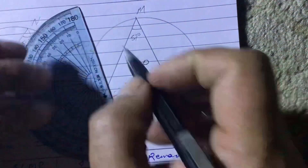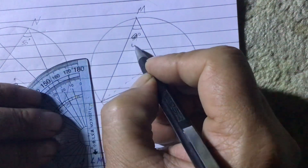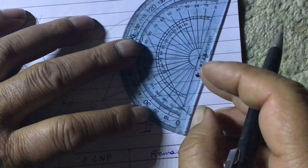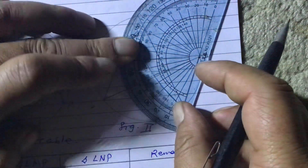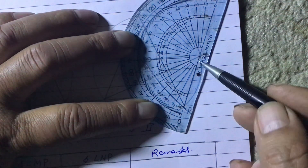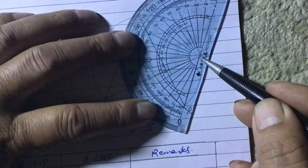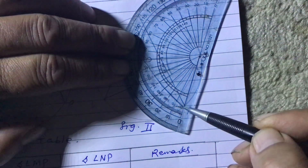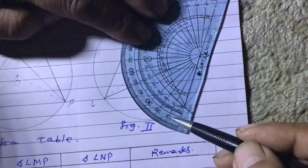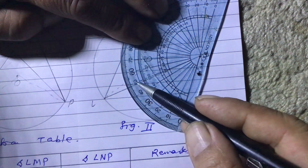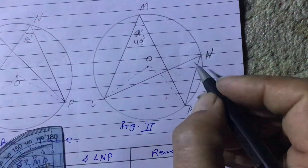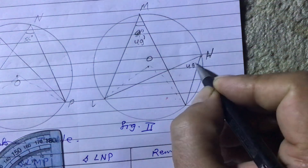Now measuring the second angle in figure two. Overlapping the line and keeping center at the vertex, counting from zero: 10, 20, 30, 40, 50 — less than 50, one line more. This is also 49 degrees. Both angles in figure two are equal at 49 degrees.